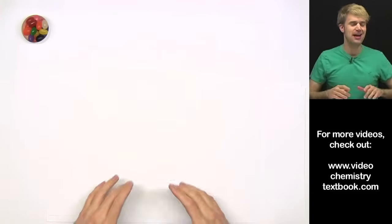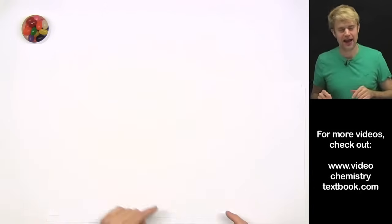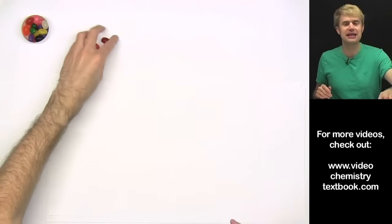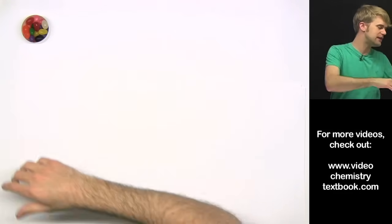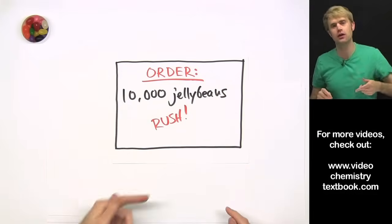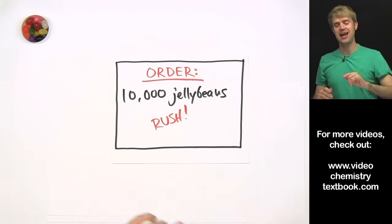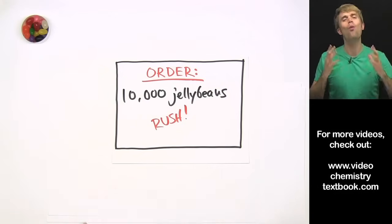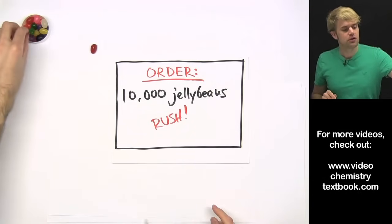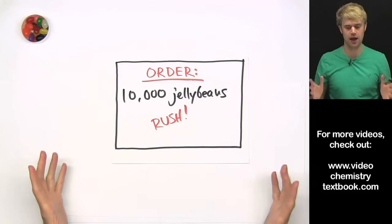So here's an analogy. Let's say that I work at a candy factory. And when someone places an order, it's my job to count out all the pieces of candy that they order. One day a giant rush job comes in for 10,000 jelly beans. And the person who placed this order wants exactly 10,000 jelly beans. What a pain this is going to be. I got to count out 10,000 jelly beans. It's going to take all day.